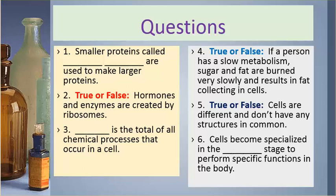Number one. Smaller proteins called blank are used to make larger proteins.